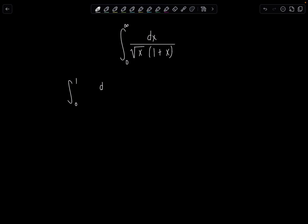Zero to one dx over square root of x times one plus x plus, and then pick up where you left off, one to infinity dx over square root of x times one plus x.